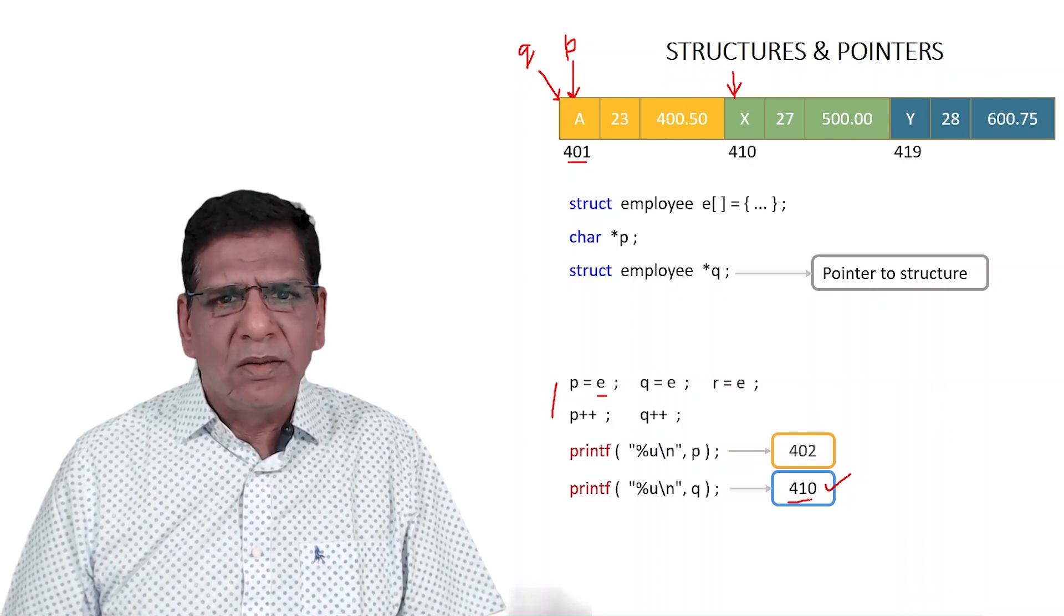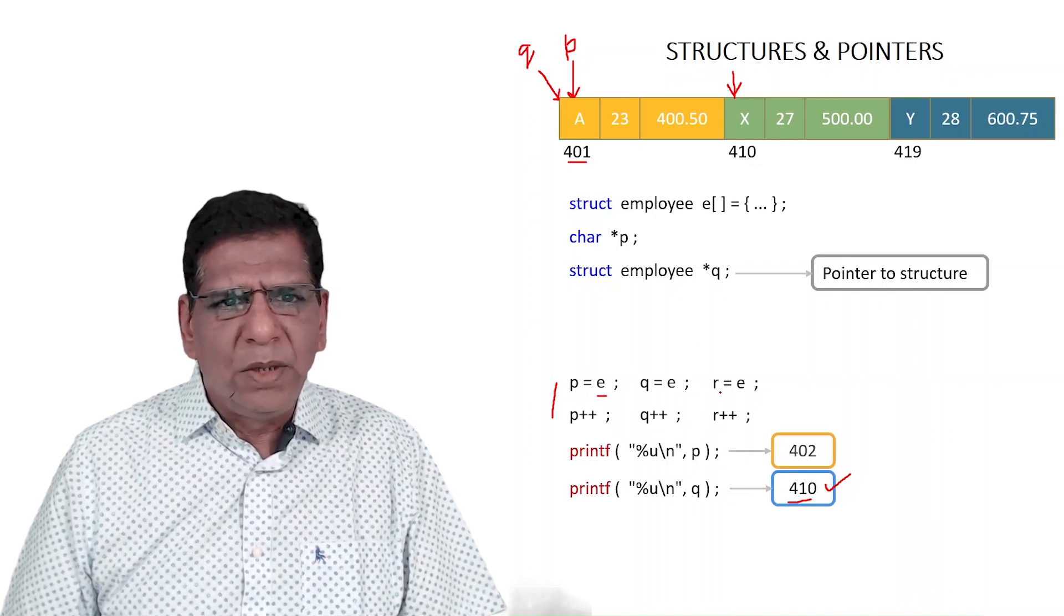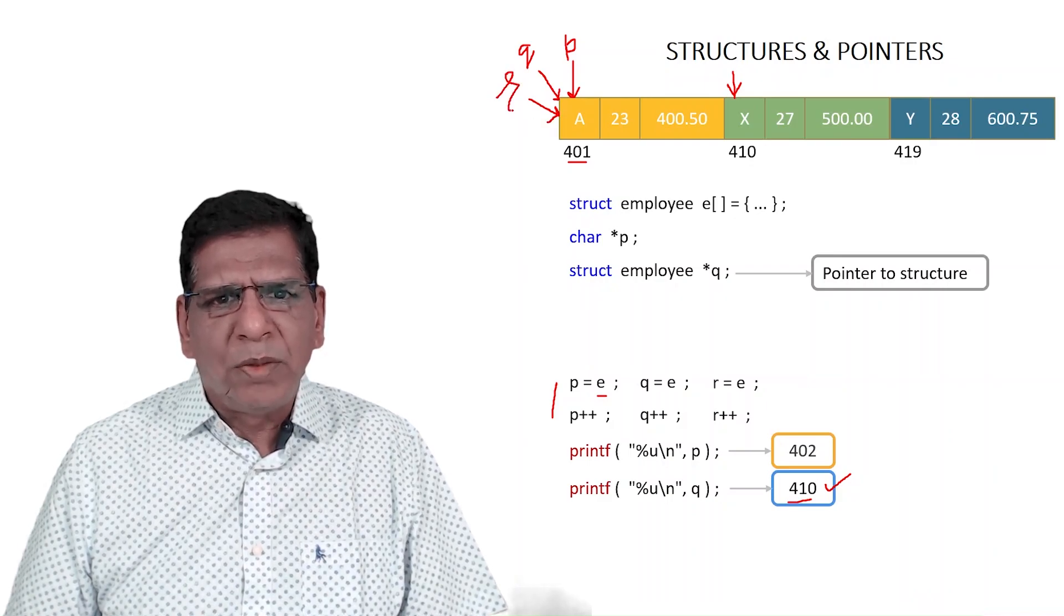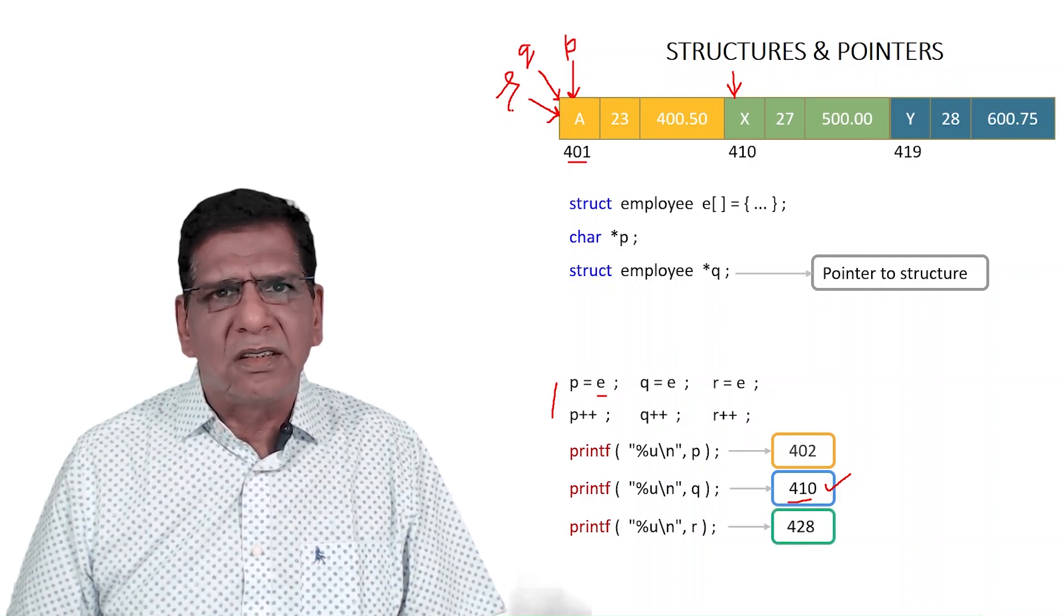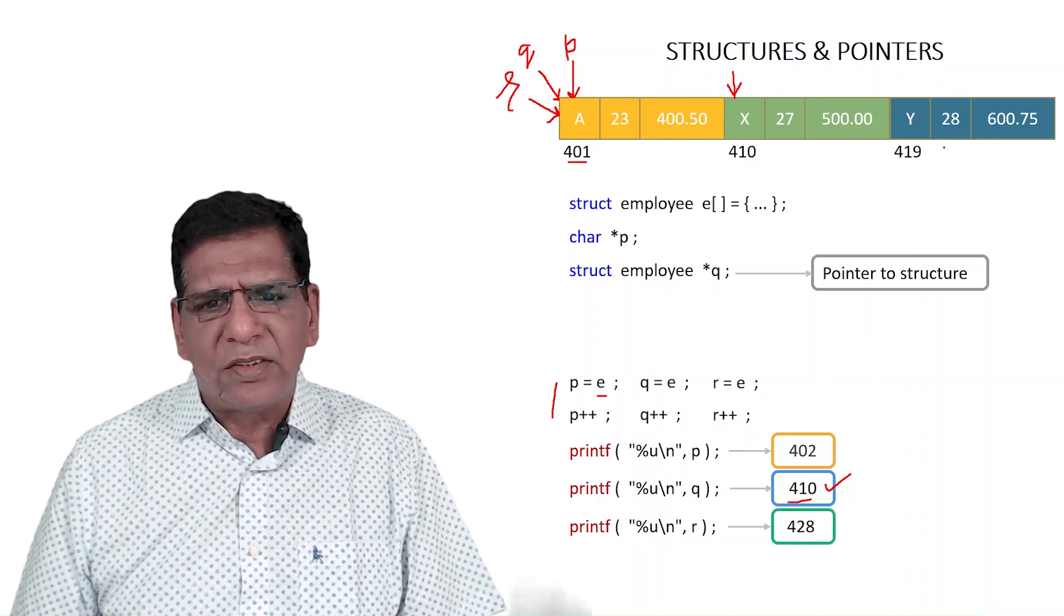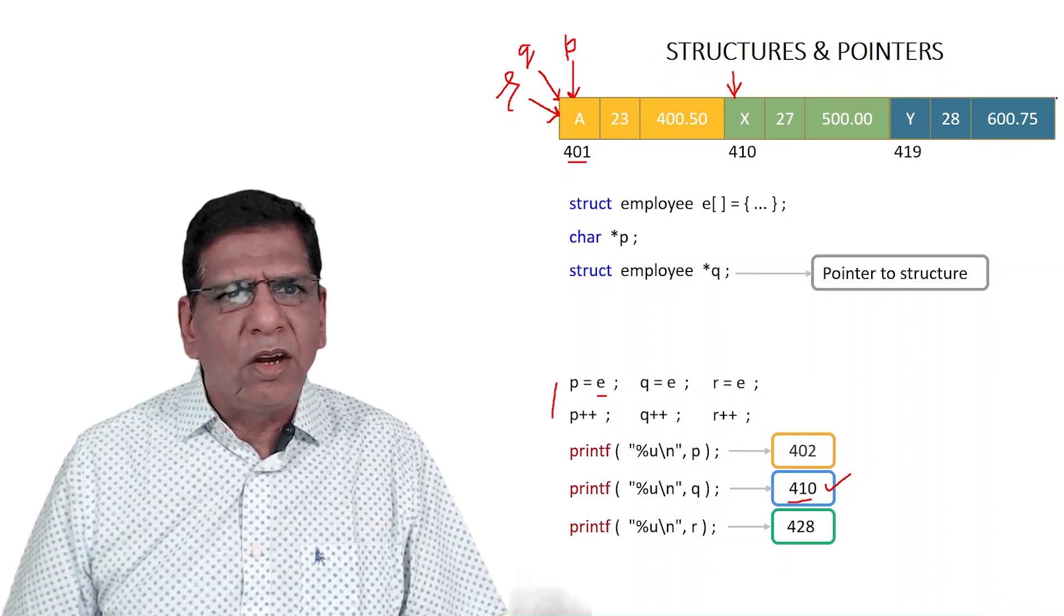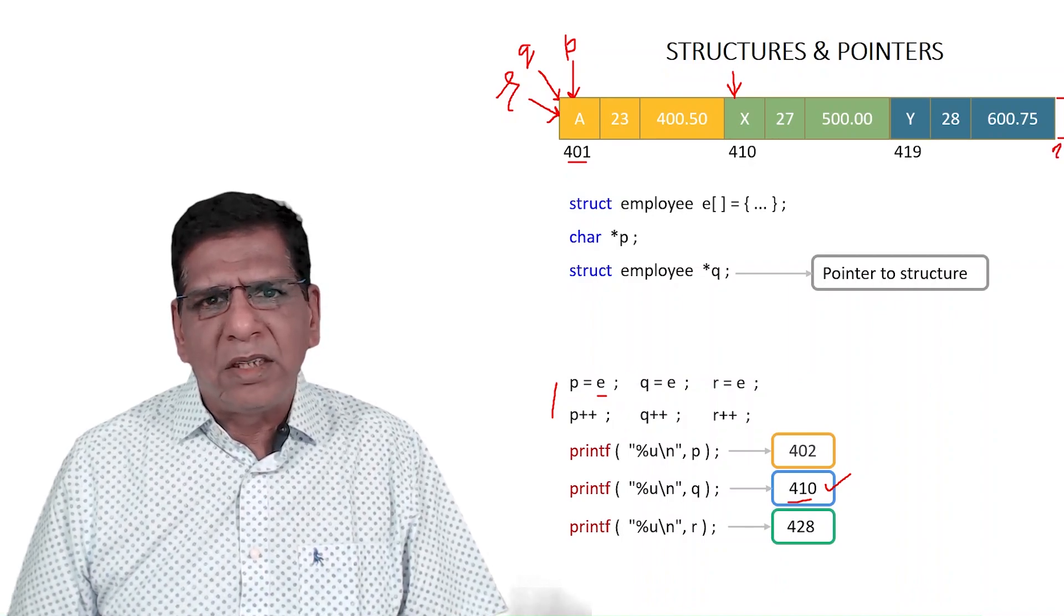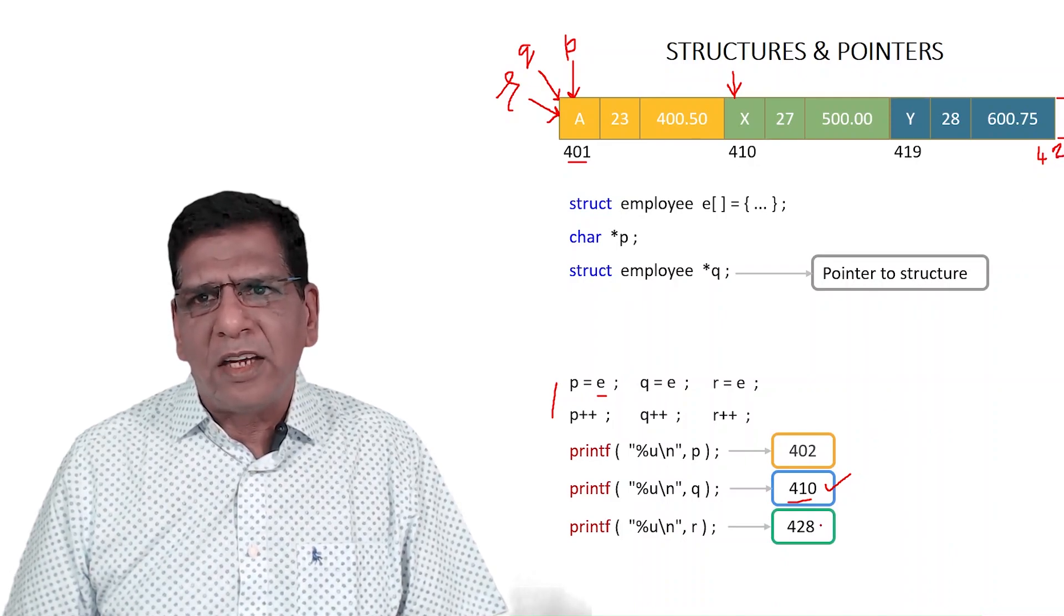I do R equal to E and R++. Let's define R to be struct employee star R bracket 3. The moment I define in this way, R becomes a pointer to an array of structures. If it's a pointer to an array of structures, then on incrementing it I will be taken to the next array of structures. The next array of structures will begin at 428, means we are thinking of R as if to begin with it's a pointer pointing here, and I'm saying it's an array of this. It's a pointer to this entire array. ++ on R, I expect that it should take me here.